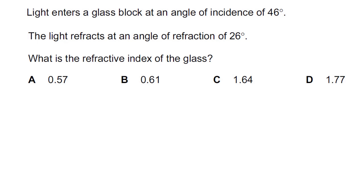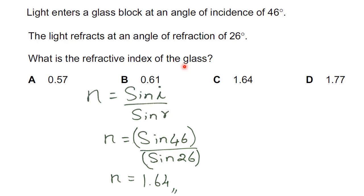Question 8: Light enters a glass block at an angle of incidence of 46 degrees and refracts at an angle of refraction of 26 degrees. Find the refractive index of the glass. Using N = sin I / sin R: N = sin 46° / sin 26° = 1.64. The answer is C.